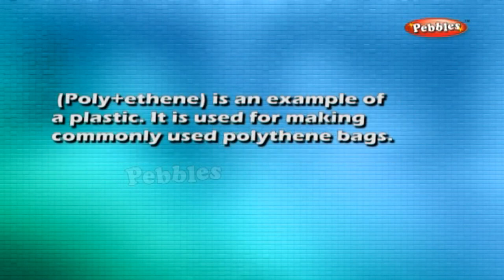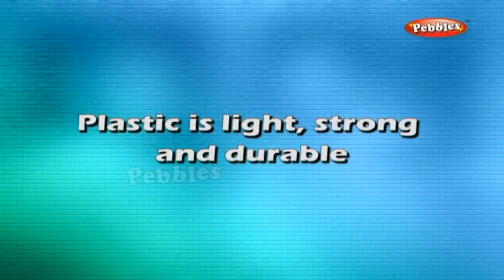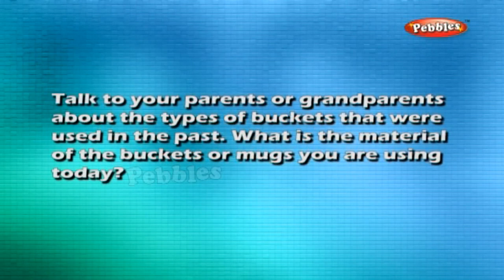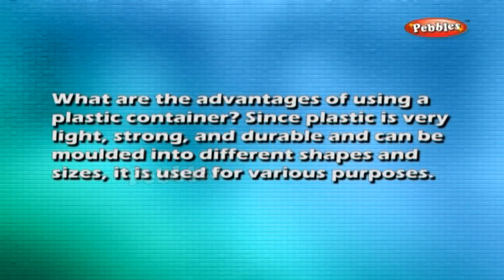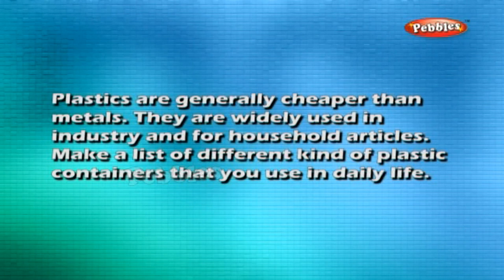Polythene (poly + ethene) is an example of plastic used for making polythene bags. Plastic is light, strong, and durable. Since plastic is very light, strong, durable, and can be molded into different shapes and sizes, it is used for various purposes. Plastics are generally cheaper than metals and are widely used in industry and for household articles.